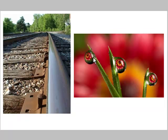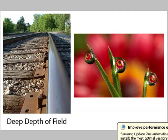Whereas the image on the right, only the blades of grass and the water droplets are actually sharp — the rest of it is out of focus. So the image on the left would be said to have a deep depth of field, whereas the image on the right would be said to have a shallow depth of field, where very little of it is actually in focus.